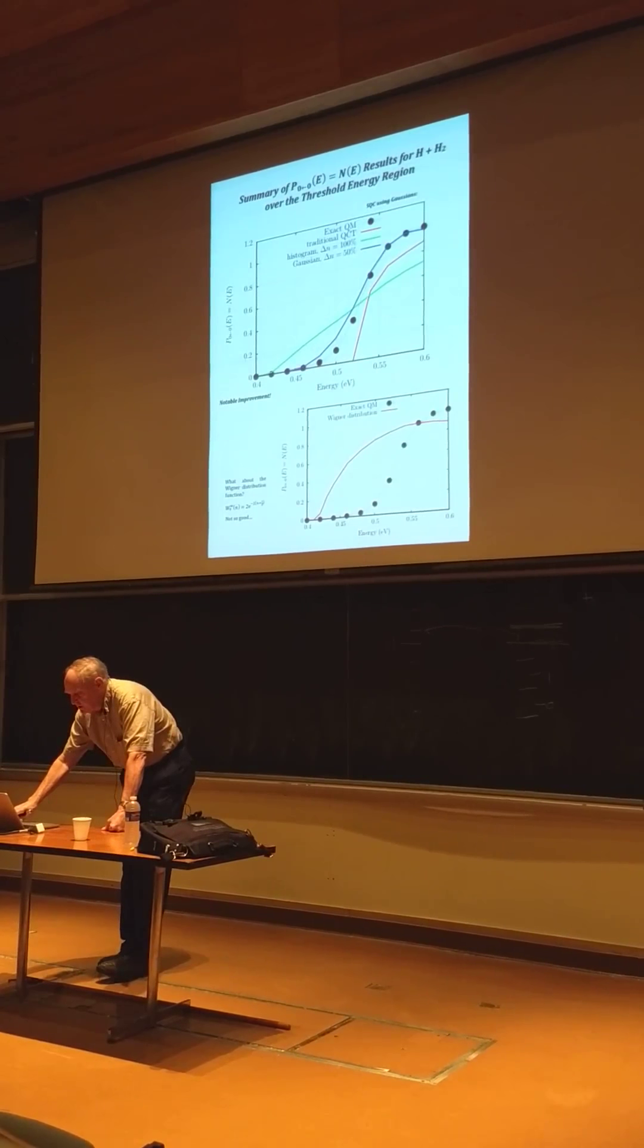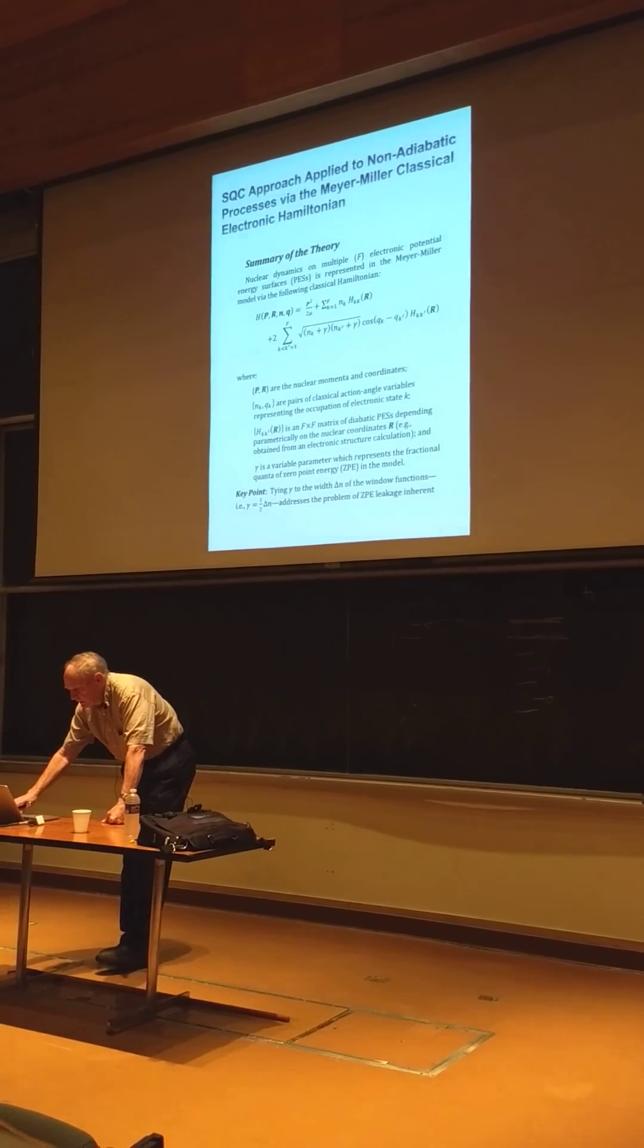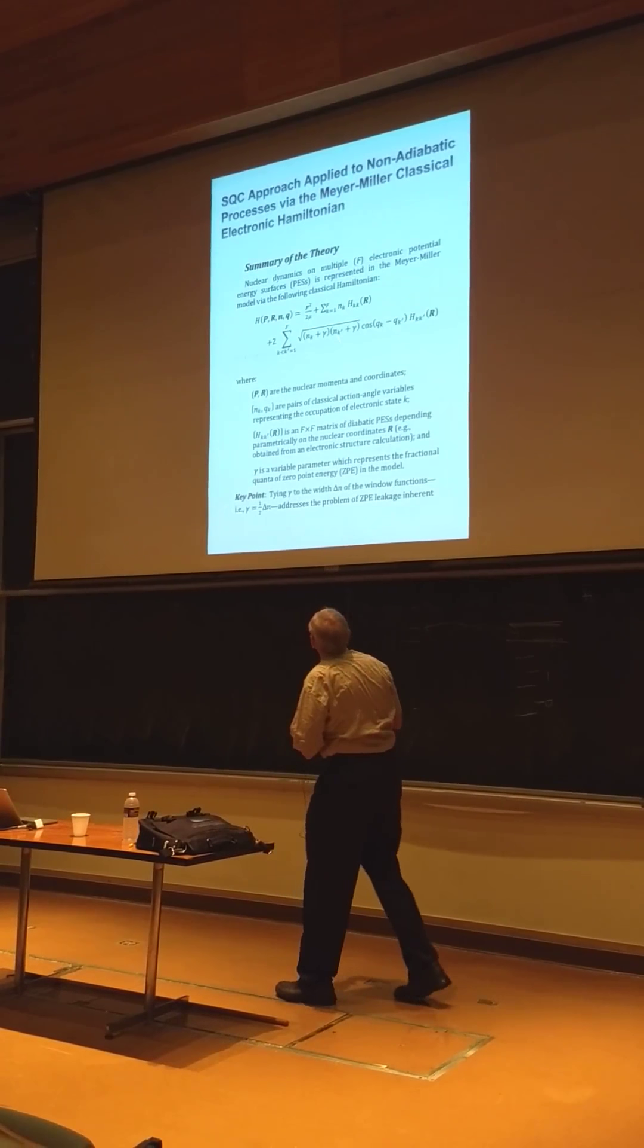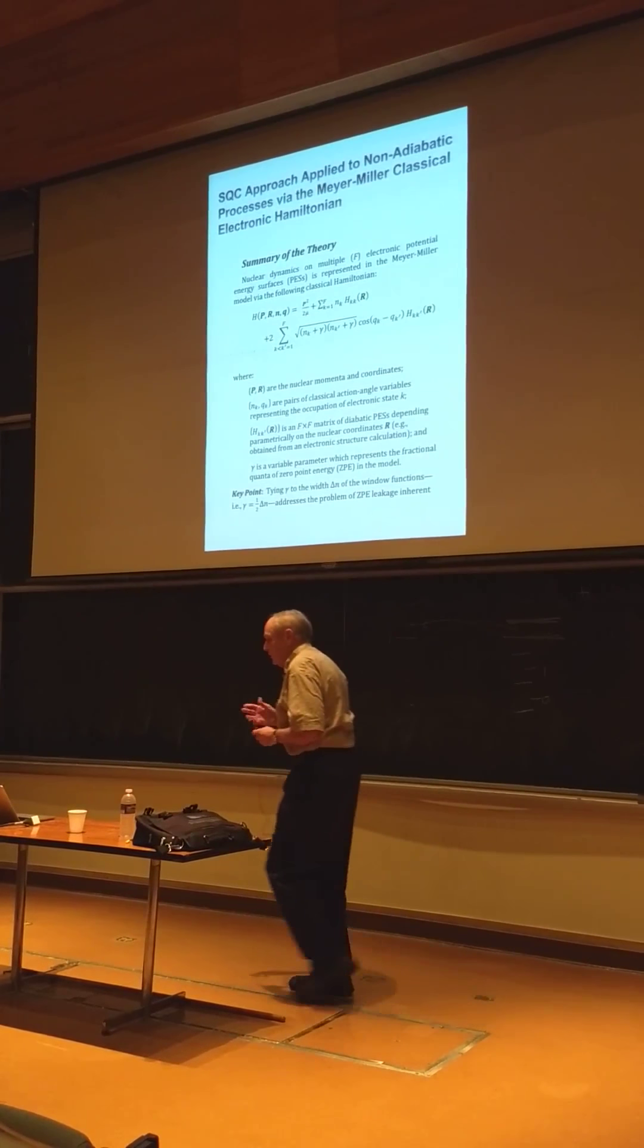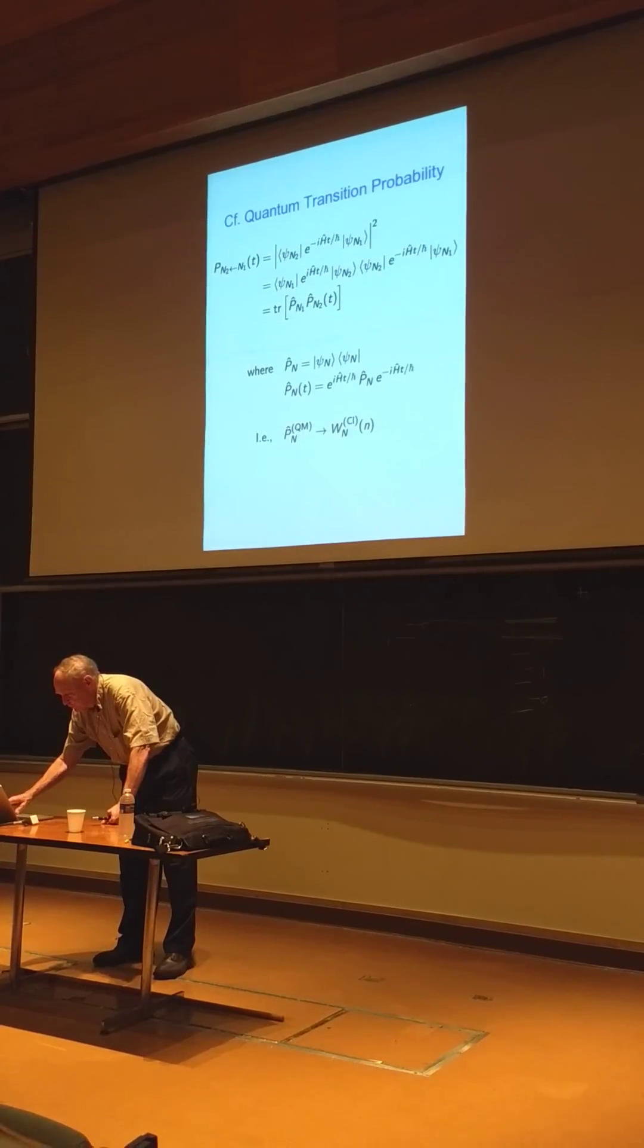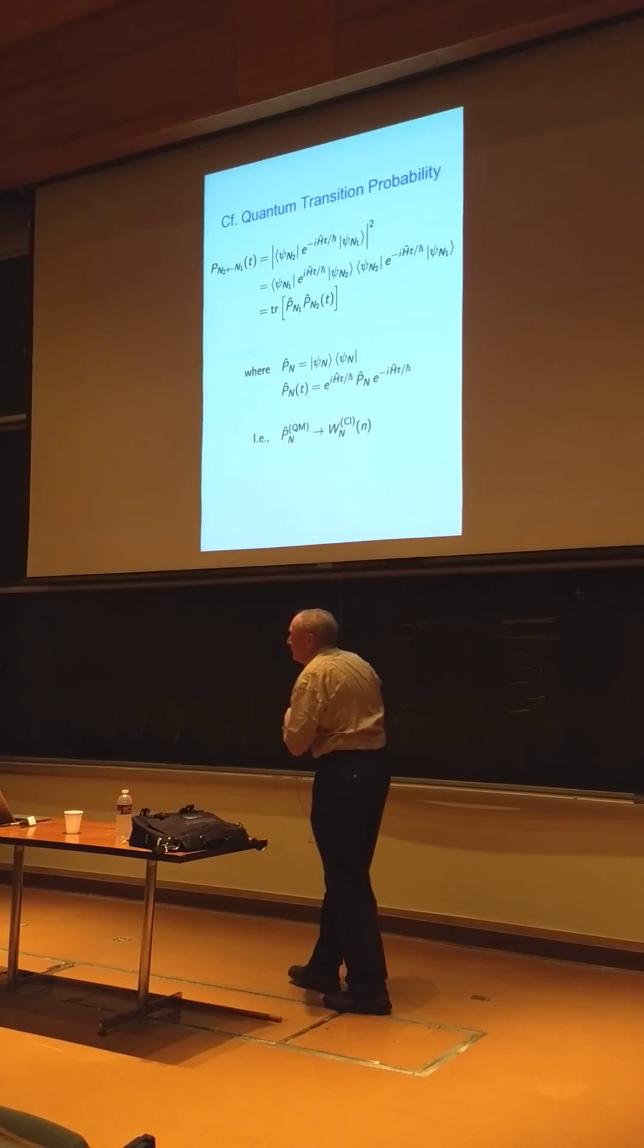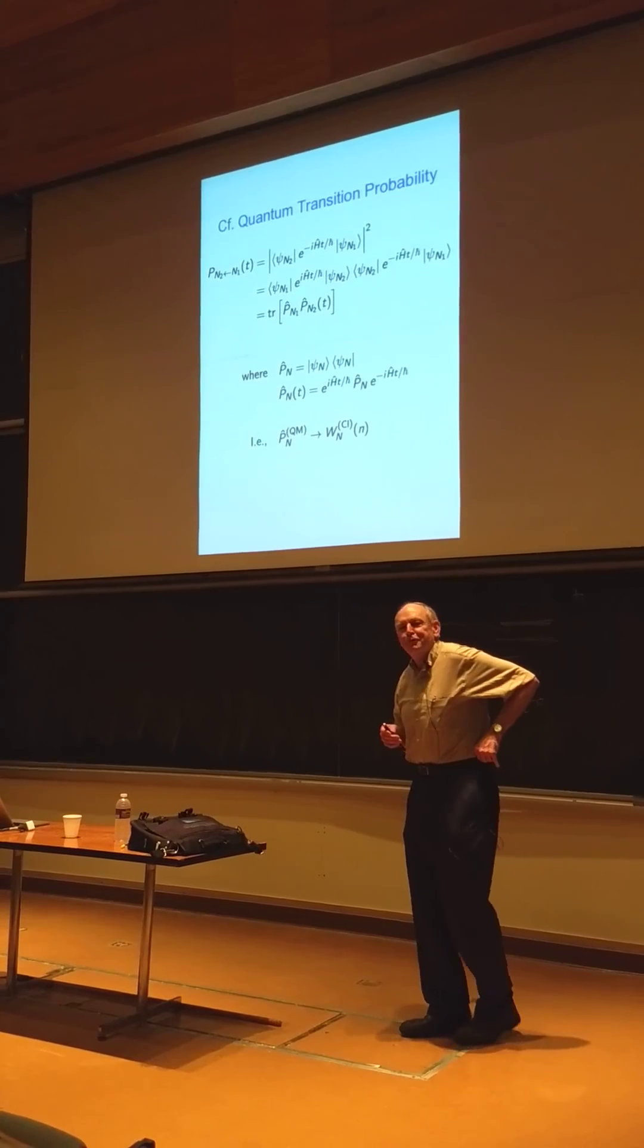It's a way of imposing Bohr-Sommerfeld quantization on the initial... within a primitive... within a little... not exactly quantized at the integer values, but a little window about the quantum values. So that's this symmetrical windowing idea. That's the algorithm. Let me skip H plus H2. Then you get older and you tend to ramble, right?